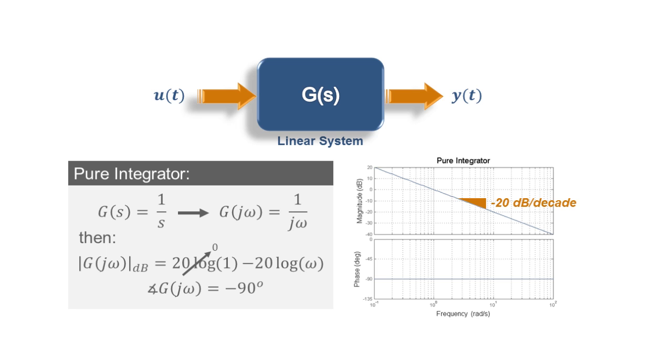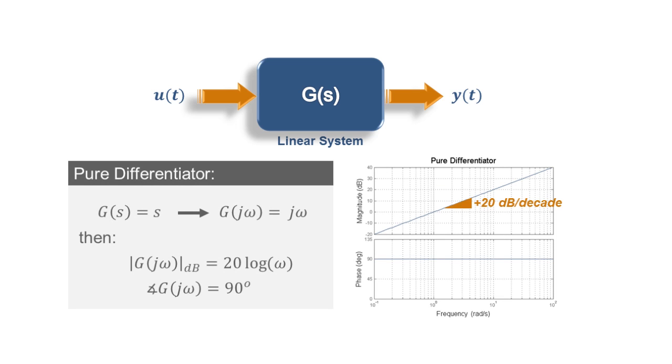Conversely, if we look at a pure differentiator, which corresponds to just s in the Laplace domain, because ω is in the numerator now, in this case the magnitude will be a line going up with a slope of positive 20 dBs per decade, and the phase will be a constant positive 90 degrees.